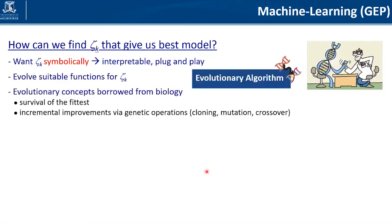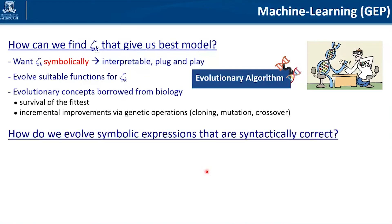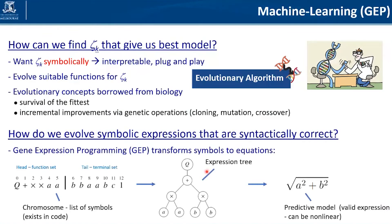The approach we're taking to develop these models is to use an evolutionary algorithm — we want to evolve suitable functions for the theta terms, borrowing concepts from biology. Everything is based on survival of the fittest, where we go from generation to generation seeing incremental improvements in model performance via genetic operations such as cloning, mutation, or crossover. What we really need to ensure is that we get models that are syntactically correct, and we do that by using a specific form of evolutionary algorithm called gene expression programming.